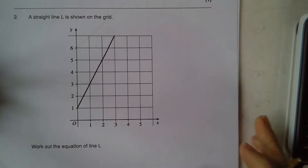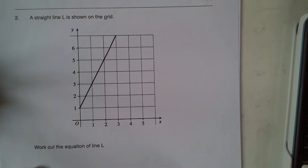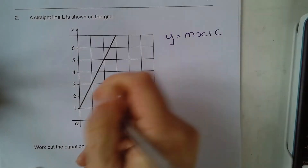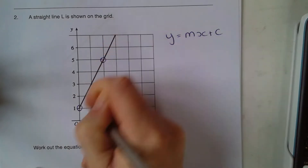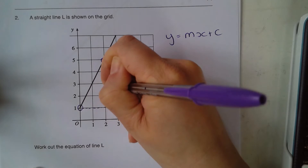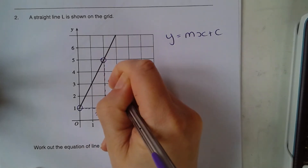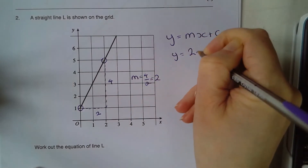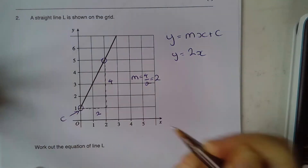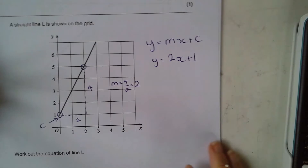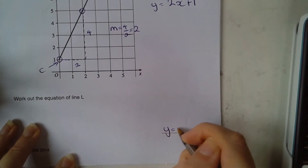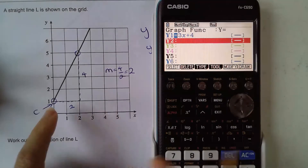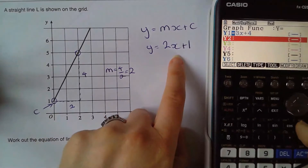Question number two is slightly different — it wants us to work out the equation of the line. So I'm going to do it in the traditional manner: y equals mx plus c. First I calculate the gradient — two units across, four units up — so m equals 4 over 2, which is 2. I now know y equals 2x, and my y-intercept, my c value, is 1, so y equals 2x plus 1. I write that on the answer line and then use the calculator to check.